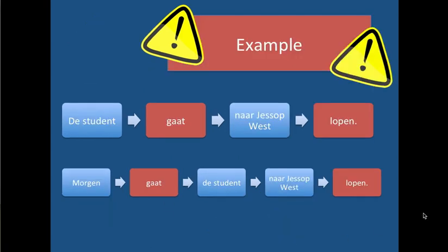Let me give you another example. 'De student gaat naar Jesup West lopen.' First place is the subject, and the two positions of the verb are very clear. But now if I start this sentence with the word 'morgen,' in order to keep the verb in second place I have to do inversion — I have to swap these around. So: 'Morgen gaat de student naar Jesup West lopen.' Inversion is one of those little tricks you have to do in order to keep the verb in second place. It doesn't affect the rest of the sentence. It just means that if the first place is taken by a non-subject, then the subject follows the verb.